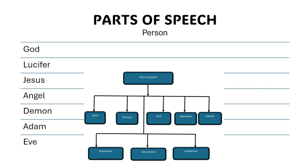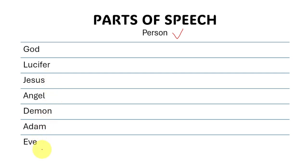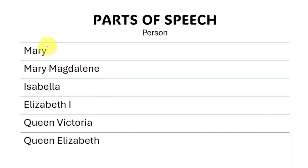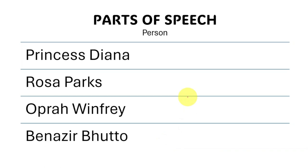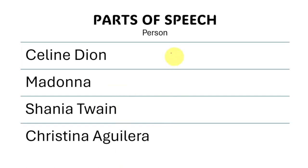Here I'm talking about the person. God, Lucifer, Jesus, angel, demon, Adam, Eve are part of another category of person. We got Mary, Mary Madeleine, Isabella, Elizabeth I, Queen Victoria, Queen Elizabeth. Also part of persons: Steve Jobs, Dennis, Ken, Bill Gates, Princess Diana, Celine Dion, Madonna, Christina Aguilera — all these are people.